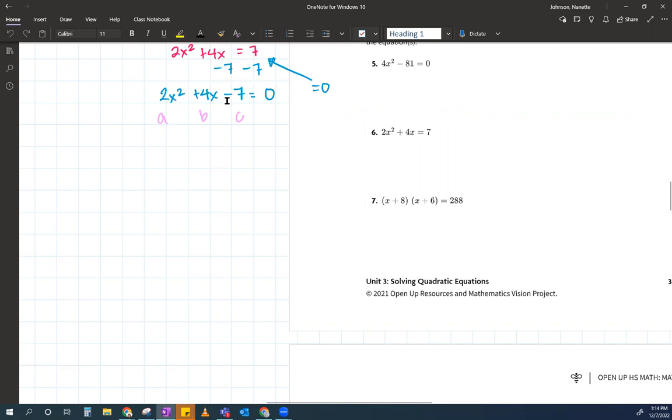All right. Negative b plus or minus the square root of b squared minus 4ac all over 2a. I know, I know you're all thinking, man, Ms. Johnson, why don't you get a singing contract? I know, I'm just kidding. Okay, so enough of that.